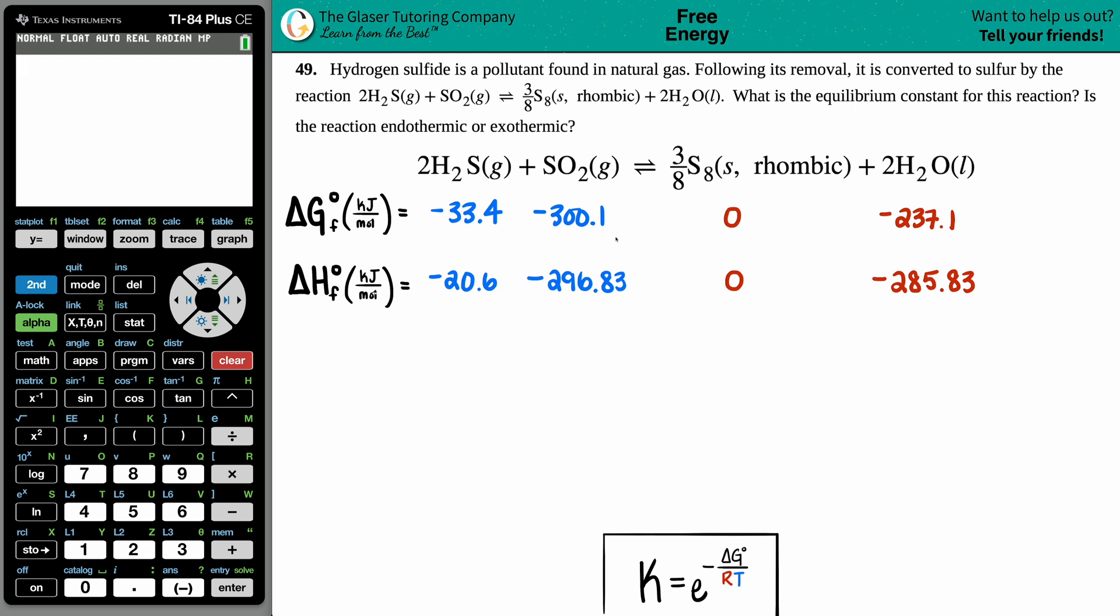Number 49: Hydrogen sulfide is a pollutant found in natural gas. Following its removal, it is converted to sulfur by the reaction 2H₂S(g) + SO₂(g) ⇌ 3/8 S₈ + 2H₂O(l). The question is asking what is the equilibrium constant for this reaction, and is this reaction either endothermic or exothermic?